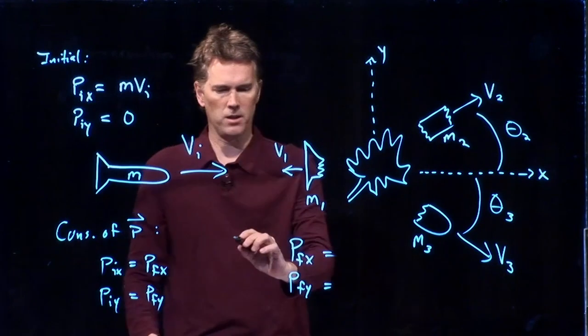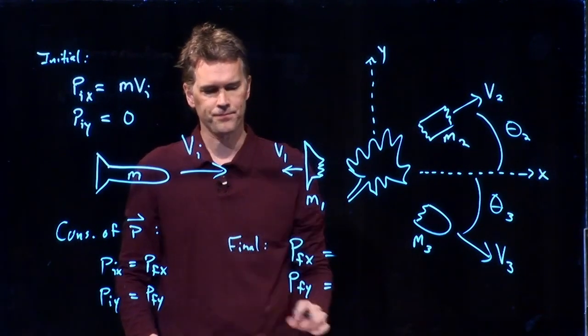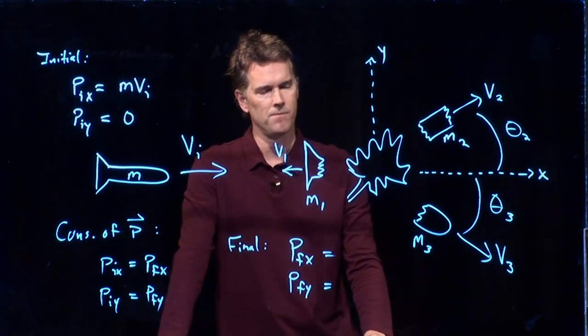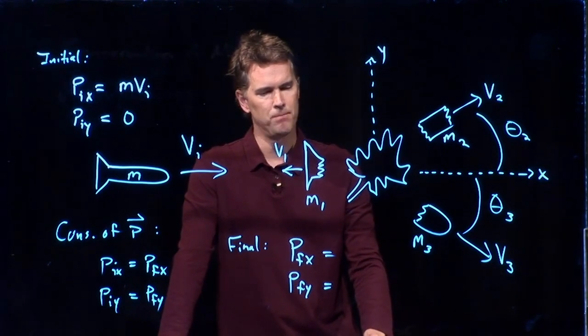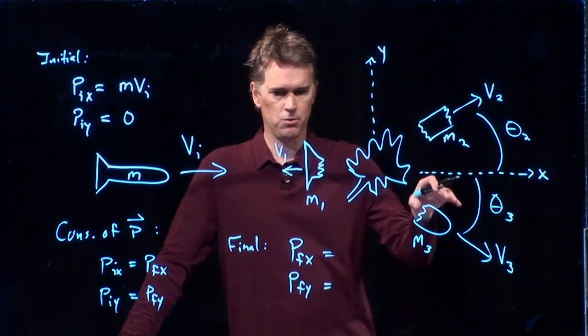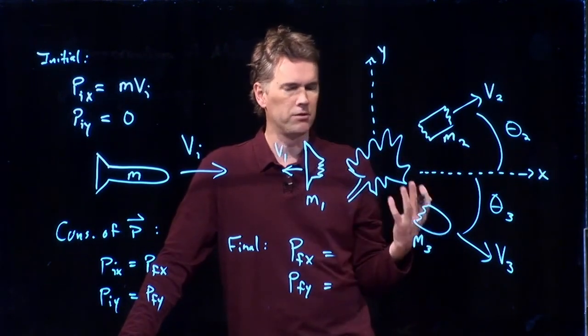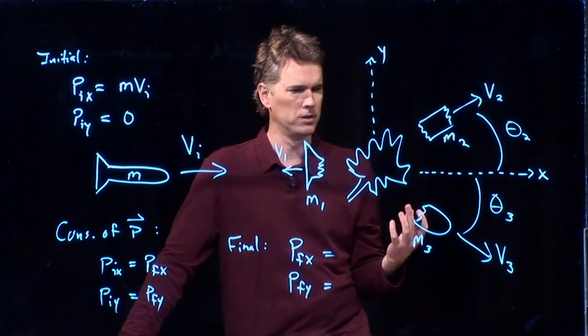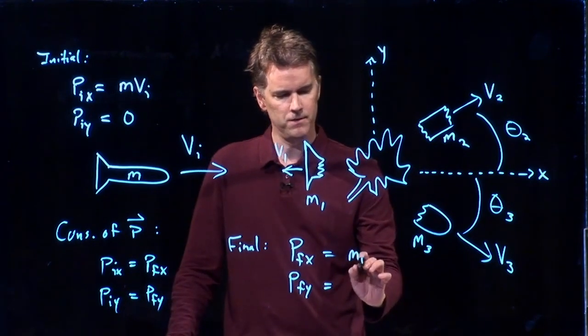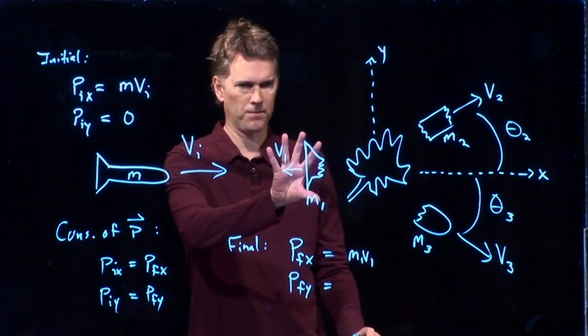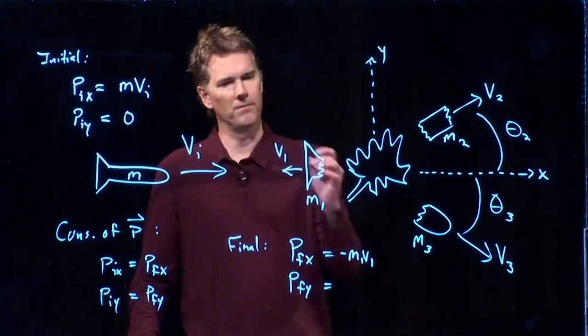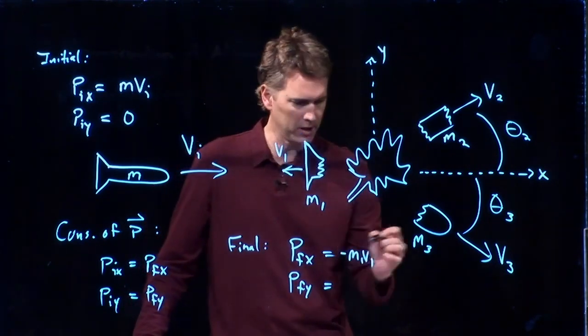And now down here we're going to write the final conditions, and then we'll worry about setting them equal and solving. What do I do? Well, P final in the x - it looks like I have one, two, three components that are going to have some contribution in the x direction, and we'll just go through them one at a time. So M1 V1 is this guy right here, but it's heading in the negative x direction, and so I put a negative sign in front of it. This is always a velocity so the direction is negative.